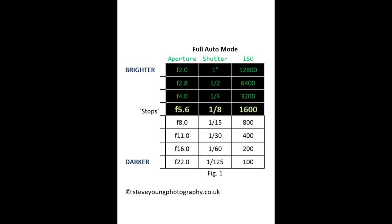I just want to explain this table and the way I've laid it out. There are a total of 24 boxes — 12 of them are black and 12 of them are white. In this particular scenario, if 12 boxes are black and 12 are white, then we have the correct brightness to our image. So for this shot of the bride getting ready, fully automatic mode hasn't given me the settings I need to achieve the look I want.